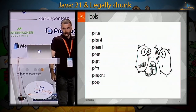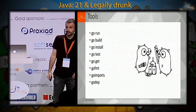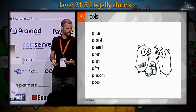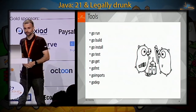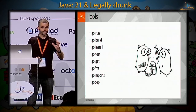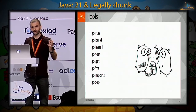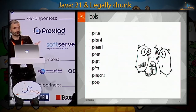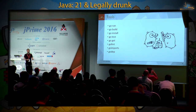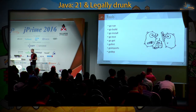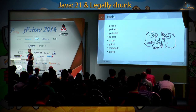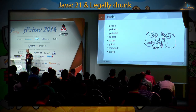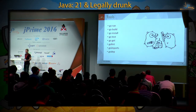Tools are not part of the language but are integral to working with Go. Go's implementation has built-in tools for most common tasks: running your program, building your executable — so you don't need something like Maven — testing, formatting your code, and managing dependencies.